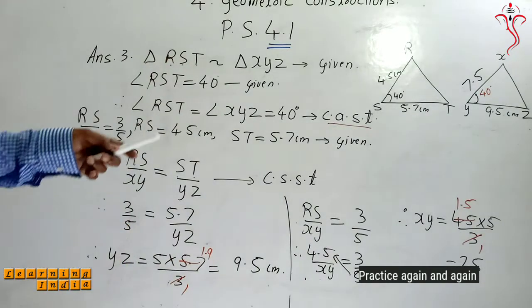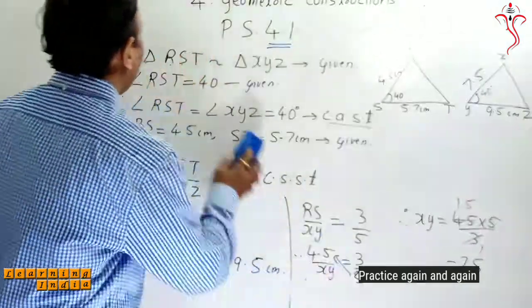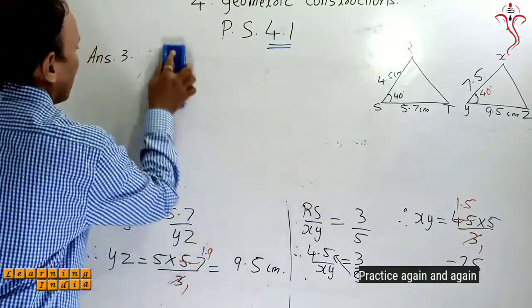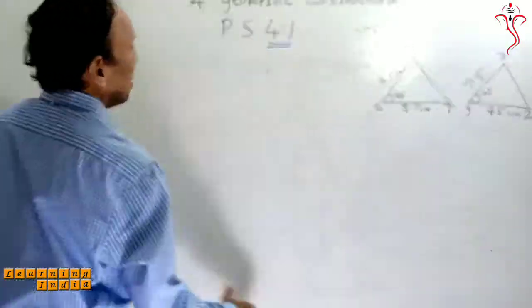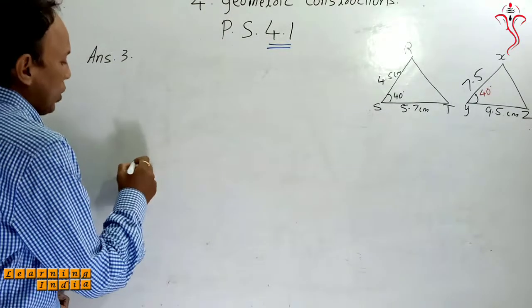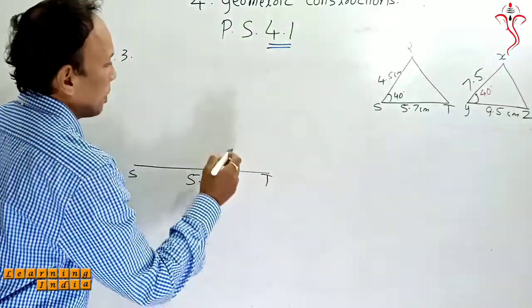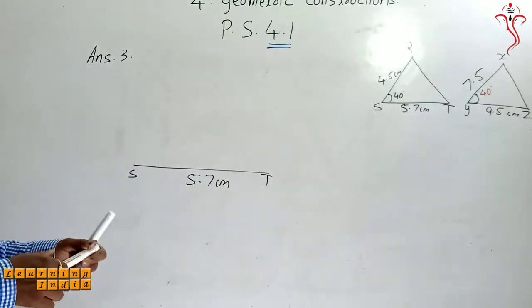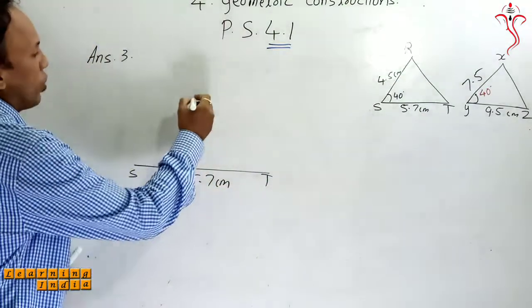So very easy. Based on these values only, we are constructing the triangle here. First base, base is triangle RST, ST base is which value is 5.7. So we will draw first that triangle. First you draw base, ST as 5.7 cm. Then what we will do? We will use protractor. With protractor we will measure 40 degrees. From S we will mark 40 degrees using protractor.